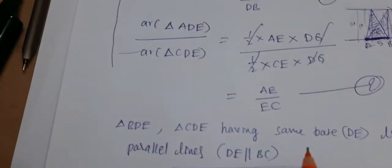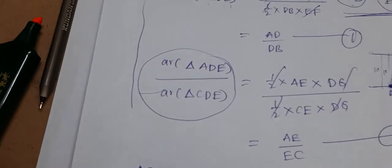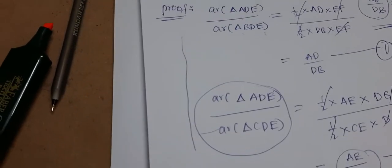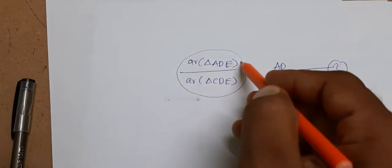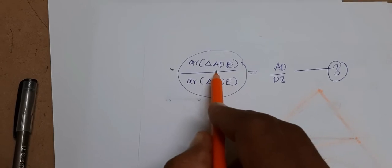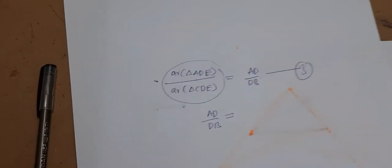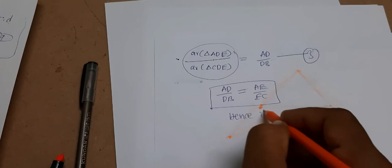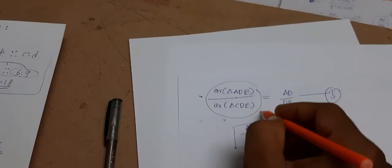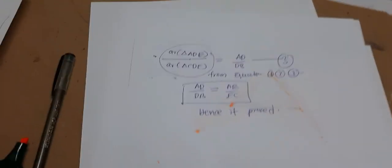Now, Equation 2 gives: Area of triangle ADE / Area of triangle CDE = AE/EC. Equation 3 gives: Area of triangle ADE / Area of triangle CDE = AD/DB. The left-hand sides of Equations 2 and 3 are equal, so the right-hand sides must also be equal. Therefore, AD/DB = AE/EC. Hence it is proved, from equations 1, 2, and 3. This completes the proof of Thales' theorem.